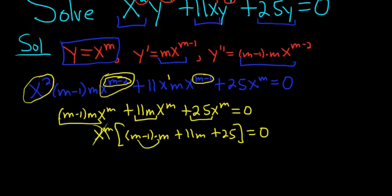So we have m times m, so m squared. m times negative 1 is negative m plus 11m plus 25. All of this is equal to 0. Let's combine like terms. m squared. Negative m plus 11m is 10m plus 25, and that's equal to 0.